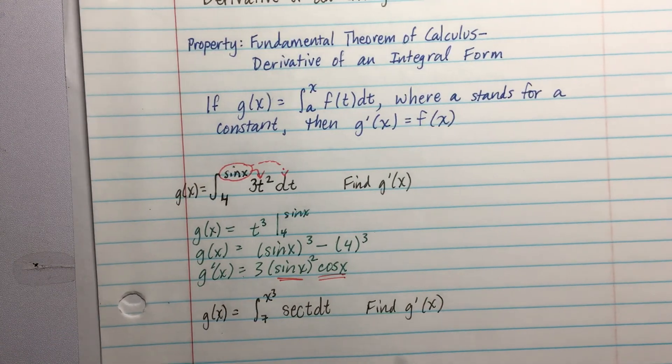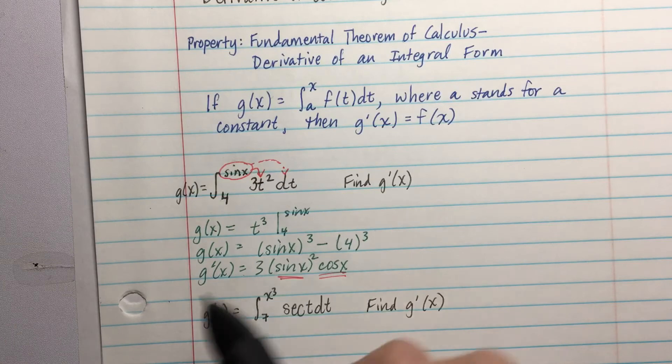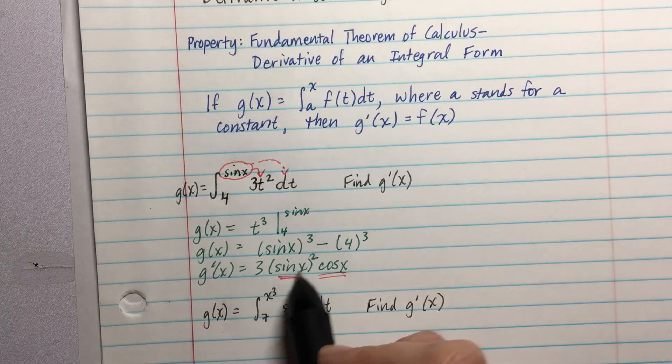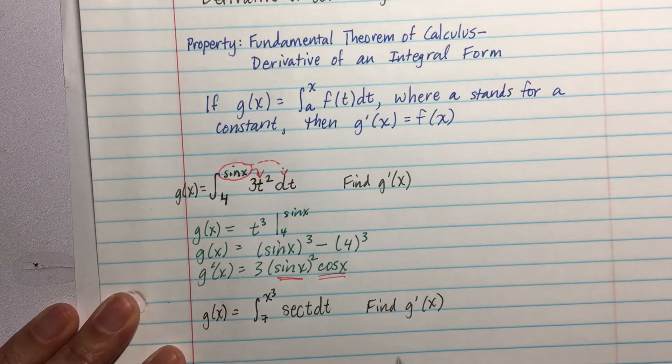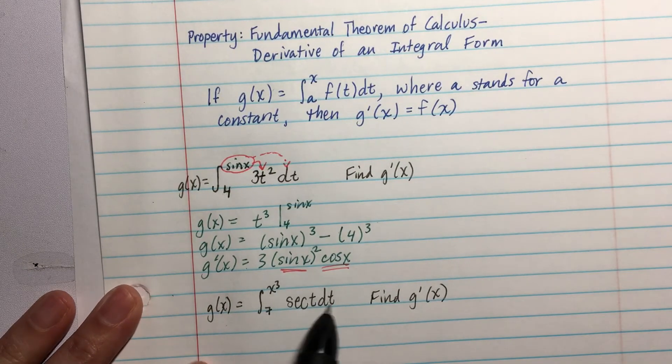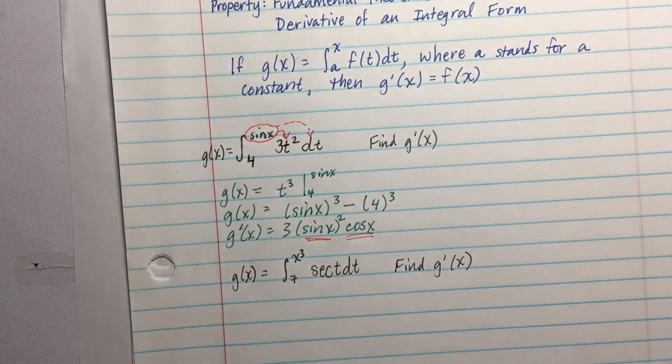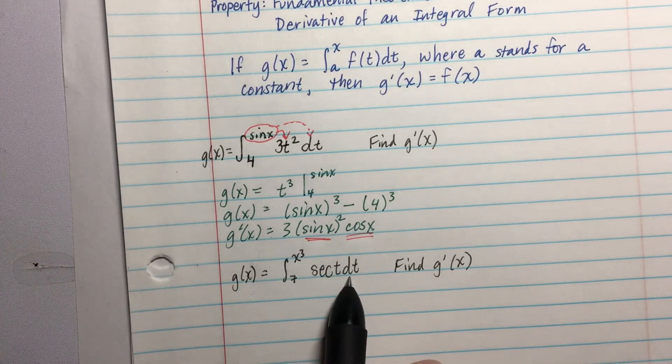So we basically have a shortcut. If we want to do a problem like this, we don't have to integrate just to derive it. And in fact, a lot of the times when these problems are presented to you, it's something you can't integrate. For example, looking at the second example, we have the integral from 7 to x³ of sec(t)dt.